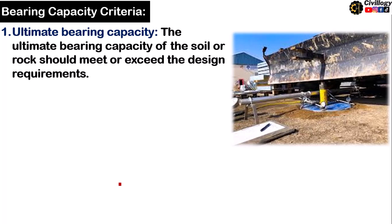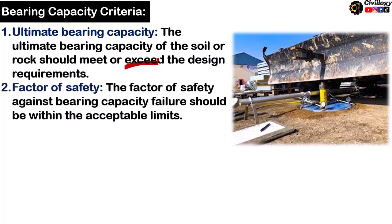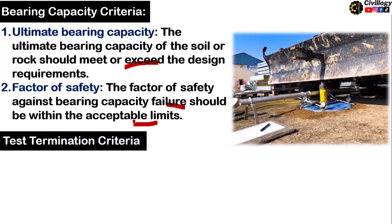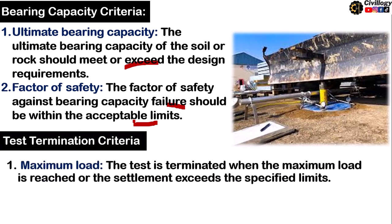Regarding bearing capacity criteria, the ultimate bearing capacity of the soil or rock should meet or exceed the design requirements. The factor of safety against bearing capacity failure should be within acceptable limits. For test termination criteria under maximum loading, the test is terminated when the maximum load is reached or the settlement exceeds the specified limits.